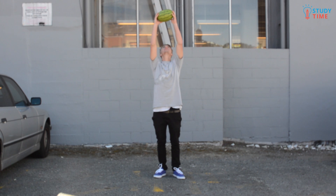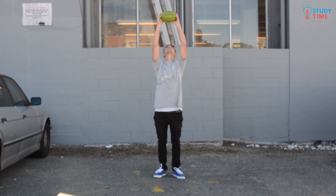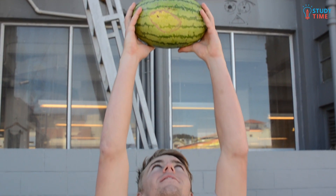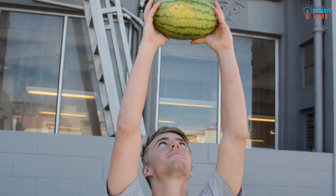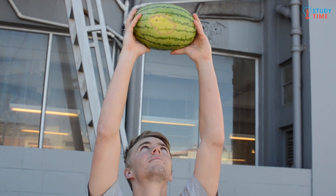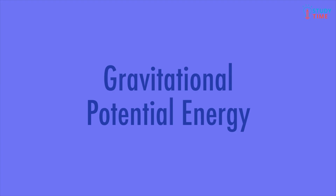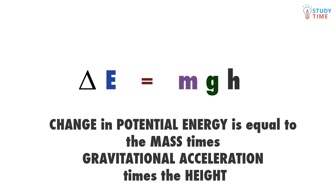The watermelon is now 3 meters above the ground. Due to gravity, the watermelon wants to fall. It has a specific amount of energy stored in it due to the gravitational pull of the earth and the watermelon's mass and position above the ground. This potential energy is gravitational potential energy. The equation for gravitational potential energy is ΔE equals mgh, which reads the change in potential energy is equal to the mass of the object times gravitational acceleration times the height of the object from the ground.